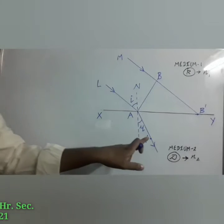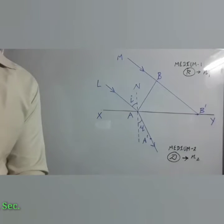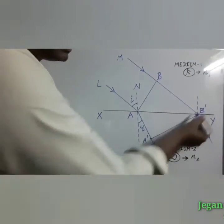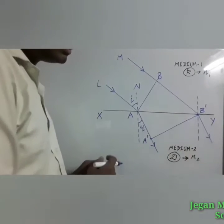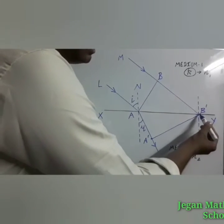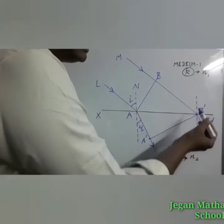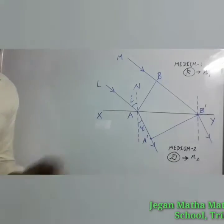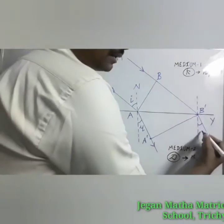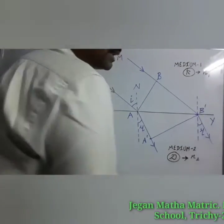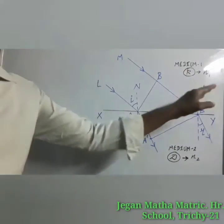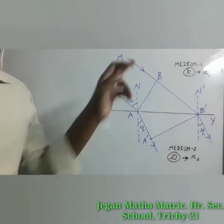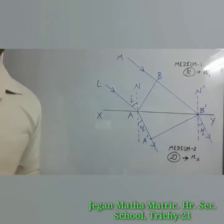We join the new points A' and B' to get another wavefront A'B' in medium 2. At point B' also, another refraction takes place. What is the angle between the normal and the refracted ray at B'? That is the angle of refraction r. The two normals N and N' are considered at the points where the rays L and M fall on the refracting surface.